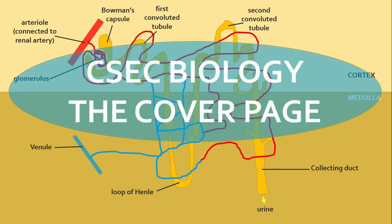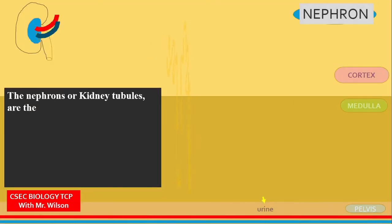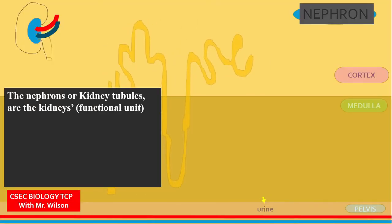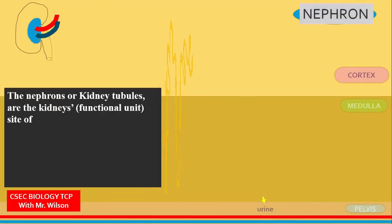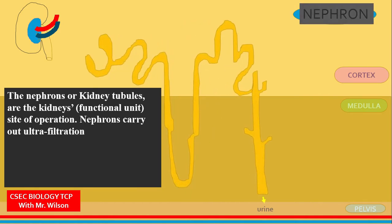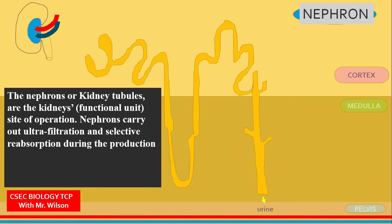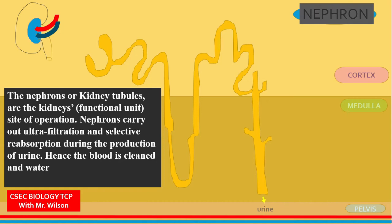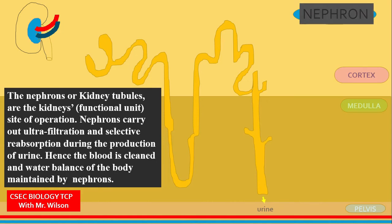Let's explore the nephron. The nephron lies between the cortex and the medulla of the kidney. The nephron is the kidney's functional unit and is also called the kidney tubule. Being the functional unit, it is pretty much the site of operation.